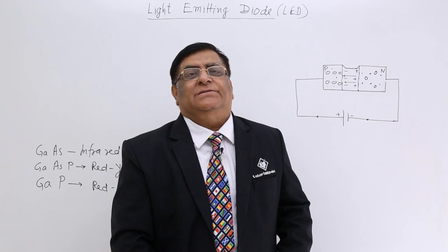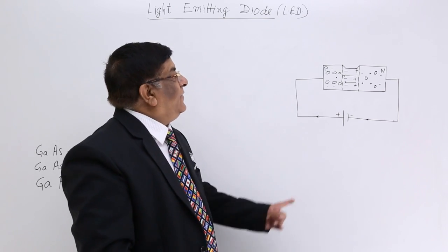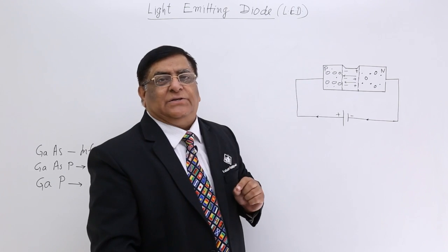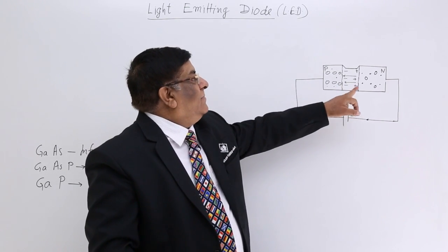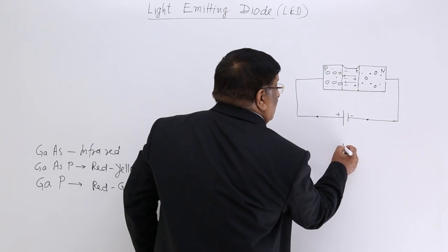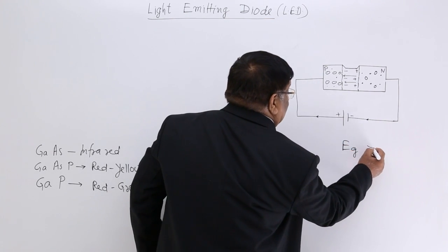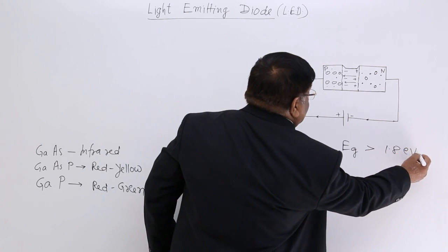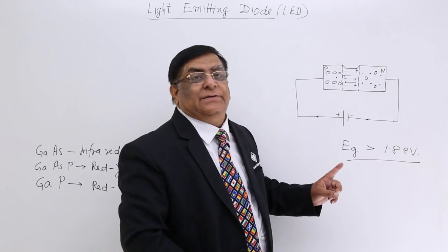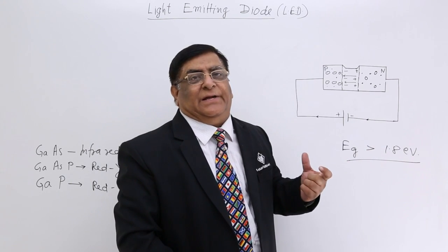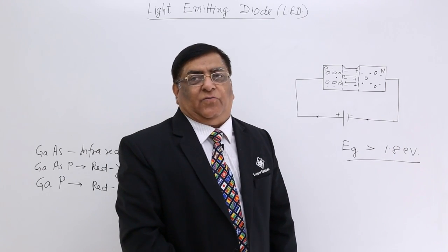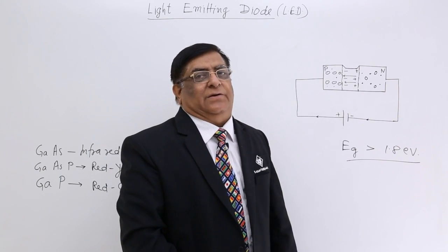How LEDs work? We use a P-N junction, that is a diode, which has got a construction such that energy gap is larger than 1.8 electron volt. So only that semiconductor, only that P-N junction can be used where energy gap is more than 1.8 electron volt.